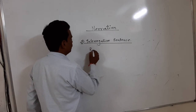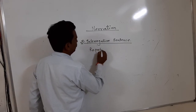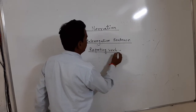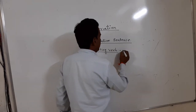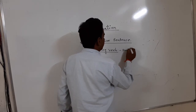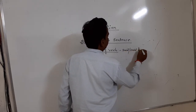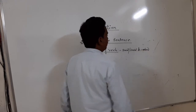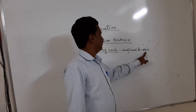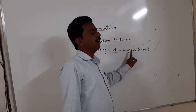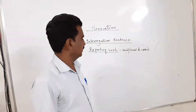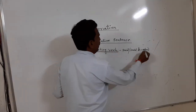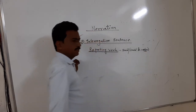Which reporting word do we use for interrogative sentences? Generally we can use 'ask' in place of 'said' or 'said to.' So when an interrogative sentence is given, the reporting word is 'ask.'